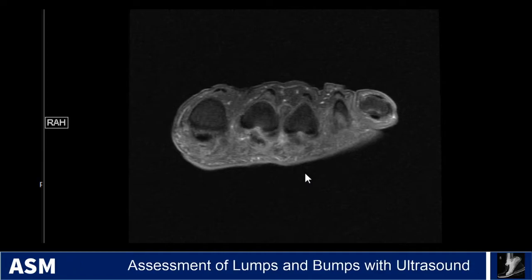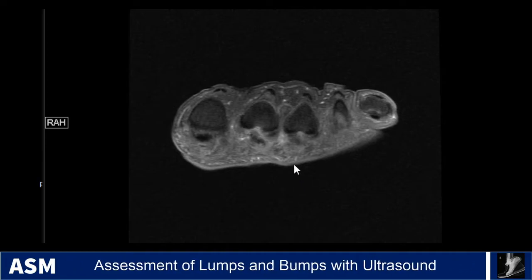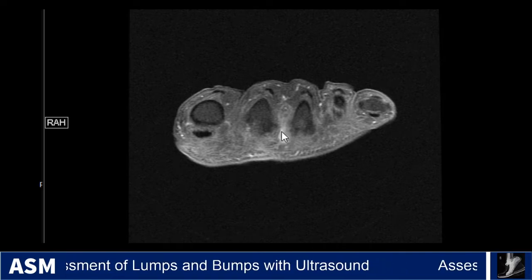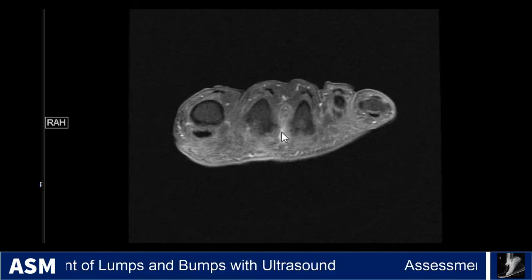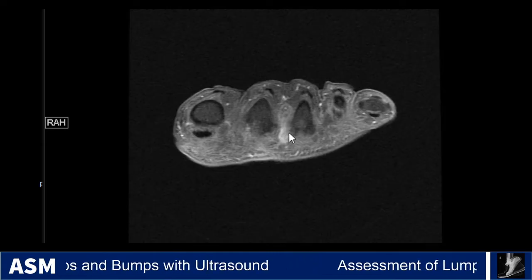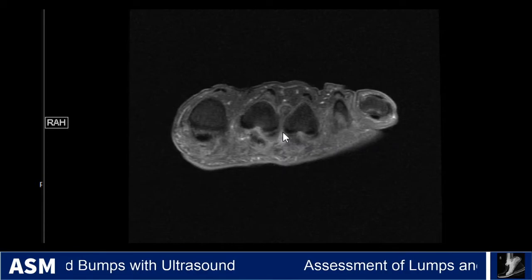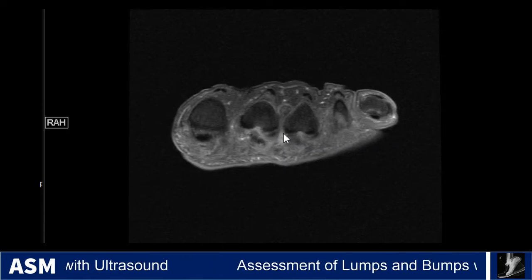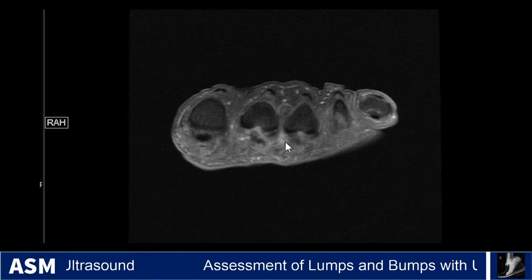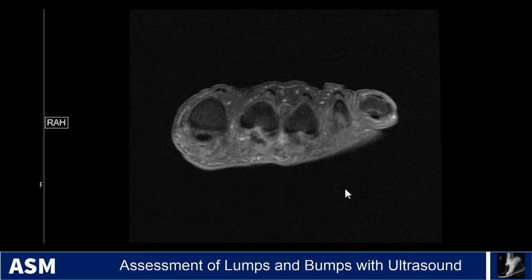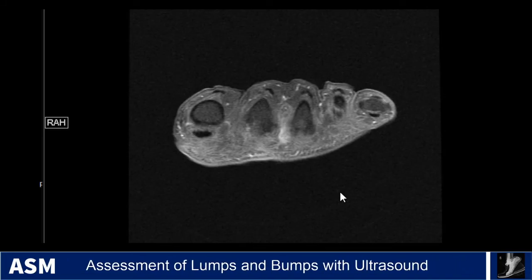On this coronal T1 fat sat post-contrast image, we see that there is an enhancing nodule along the plantar aspect of the second web space below the intermetatarsal ligament. Contrast is not always necessary but sometimes helpful. The T1 and PD or T2 are probably sufficient to make the diagnosis in most cases. On ultrasound, when it's large enough, you can see it as well. This was removed and pathologically confirmed as a Morton's neuroma.